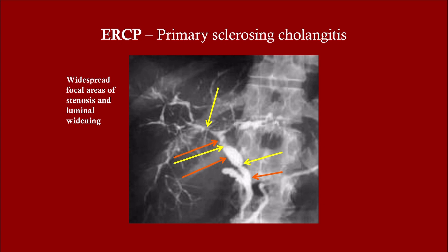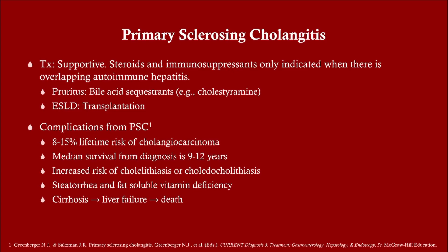Because you have areas of stricture. The treatment is supportive. Steroids and immunosuppressants are only indicated when there's overlapping autoimmune hepatitis, but that happens fairly frequently. So if you have a patient with PSC you want to work them up for autoimmune hepatitis — it won't touch the PSC, but it would delay end-stage liver disease. The treatment would be steroids and anti-TNF drugs.